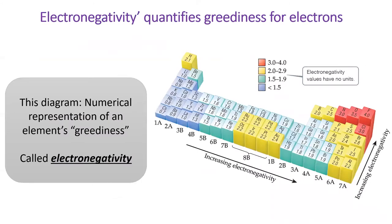Chemists invented the term electronegativity to quantify how greedy each atom is. Elements with high electronegativities will hold onto electrons tighter and pull those electrons closer to their nucleus. The most electronegative atoms are in the upper right corner of the periodic table. The greediest of all elements is fluorine.